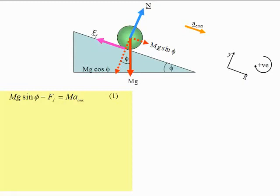Now we want the equation of motion perpendicular to the slope. That is the normal reaction force N, minus the component of gravity which is mg cos phi. Putting that into Newton's second law equation, it equals the mass times the acceleration of the center of mass in the y direction, a_cm. That's equation 2, and that equals zero, because there is no acceleration in the y direction.